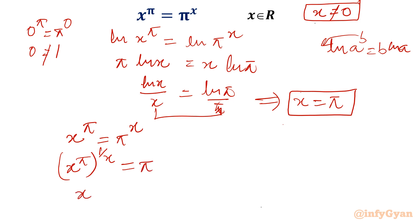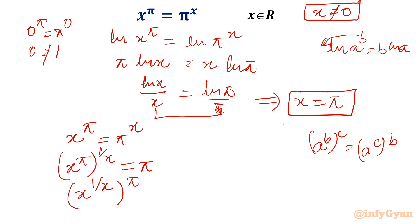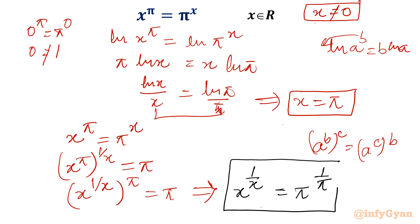By the exponent property, a^b^c = a^c^b, so we can rewrite this as (x^(1/x))^π = π. Raising both sides to the power 1/π, the equation becomes x^(1/x) = π^(1/π).